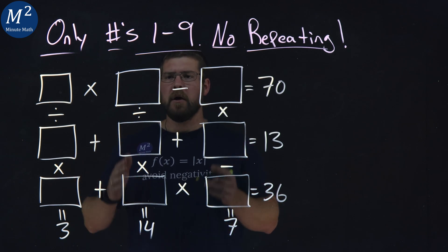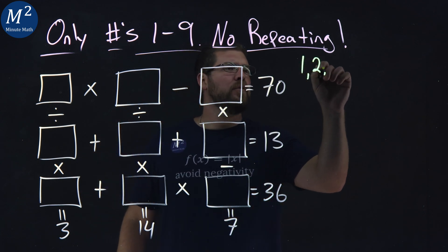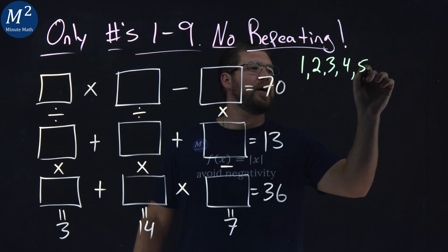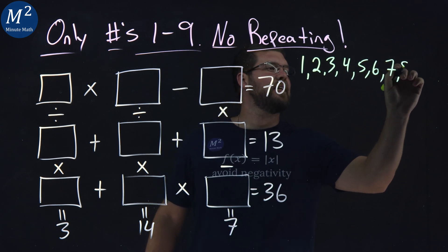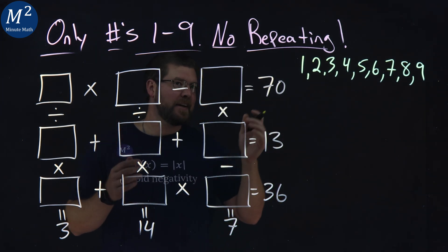All right, well, we know our numbers here are just one through nine, so let's go write them down. One, two, three, four, five, six, seven, eight, nine. We got all of our numbers here.